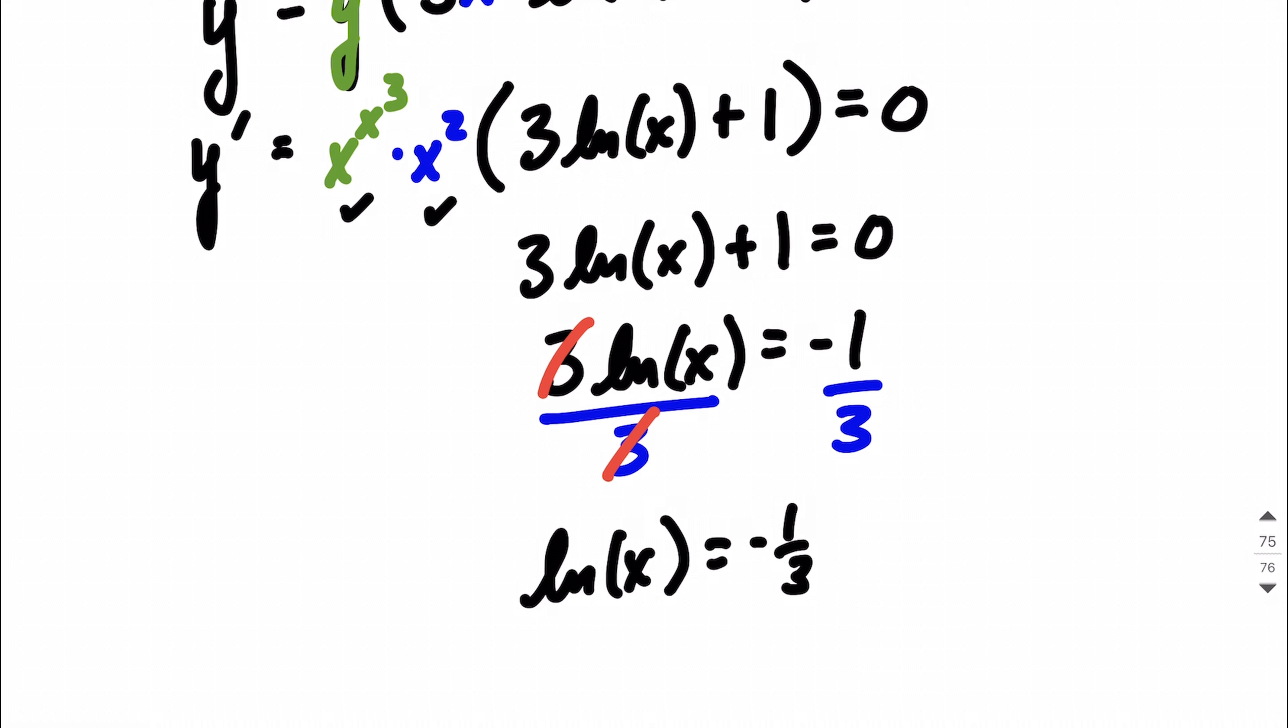And now, because the natural log is on one side by itself, we can either think about switching this over to exponential form, using the definition of logarithmic function, or because the natural log has a base of e, what I like to do is visualize this as moving that natural log up to the exponent and using strategically e as the base on both sides.